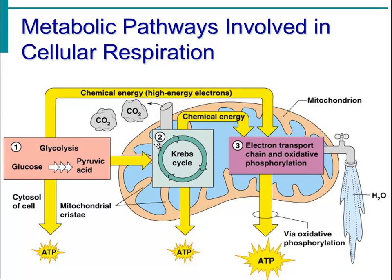Cell respiration here is a decent overview. You've got glycolysis and where it occurs. You've got the Krebs cycle, which occurs in the blue area called the mitochondrial matrix. The electron transport chain and oxidative phosphorylation occur on these little membranes — the inner membrane of the mitochondria. The outer membrane is also visible. The electron transport chains are on the inner membrane of the mitochondria. You see a water spigot coming out — the end product of this reaction is water because the oxygen accepts electrons and water is produced.